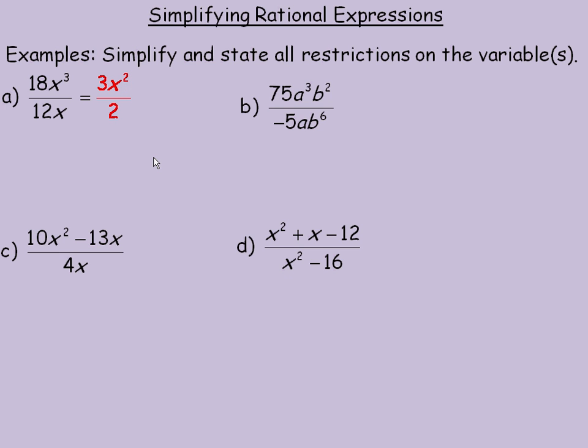Now the restrictions come from the fact that the denominator, the 12x in this case, is not allowed to equal 0. So we're looking for what values of x would make 12x equal to 0. And those are the numbers we're not allowed to put in place of x.